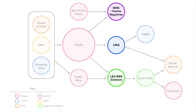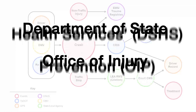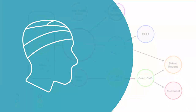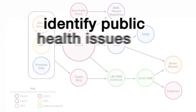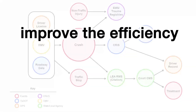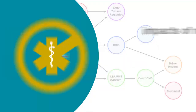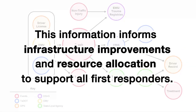Crash data flows into three primary registry types: EMS or trauma registries, CRIS, and local agency record management systems. The EMS and trauma registries are managed by the Department of State Health Services' Office of Injury Prevention. The Texas EMS and trauma registries is an online reporting system that collects legislatively mandated data on all EMS runs, traumatic brain injuries, spinal cord injuries, submersions, and other traumatic injuries. The purpose of registries is to monitor and analyze the EMS and trauma care systems. Data is used to perform epidemiological investigations to identify public health issues and support injury prevention projects, which ultimately improve the efficiency and quality of care that patients receive in Texas. This data is used by the Texas Traffic Records Coordinating Committee to investigate traffic safety-related issues, including the examination of EMS response time and impacts of not getting individuals involved in crashes to trauma hospitals within the golden hour. This information informs infrastructure improvements and resource allocation to support all first responders.